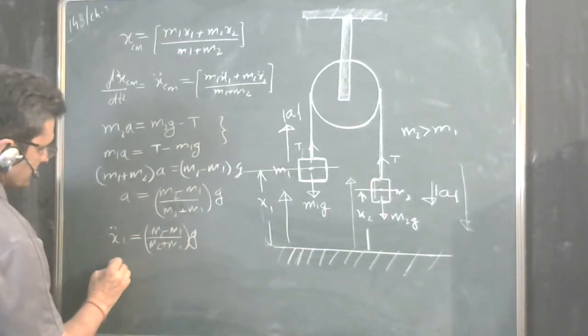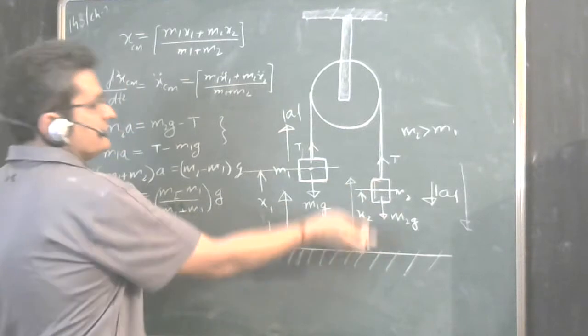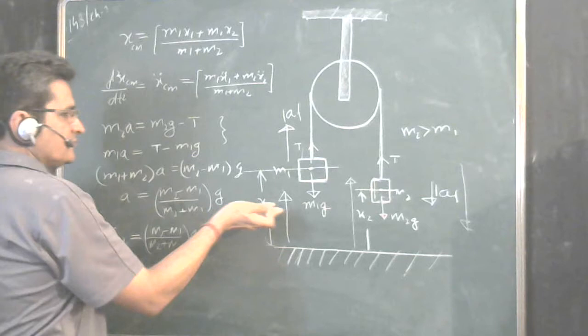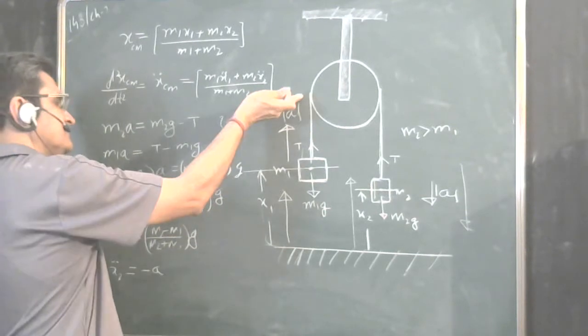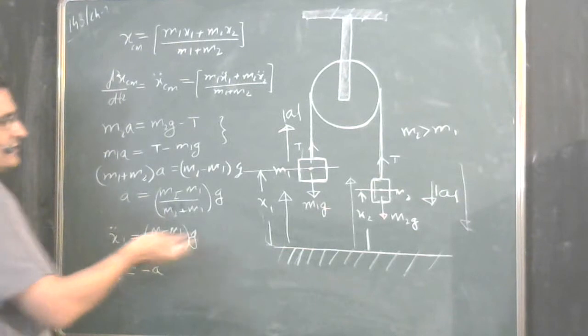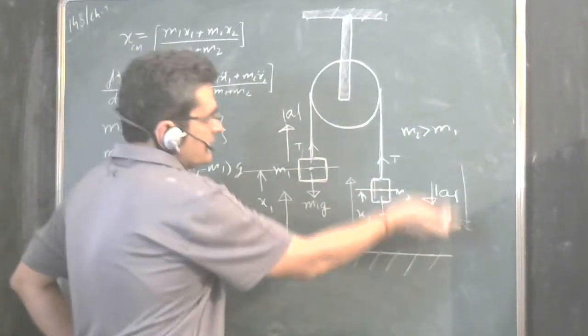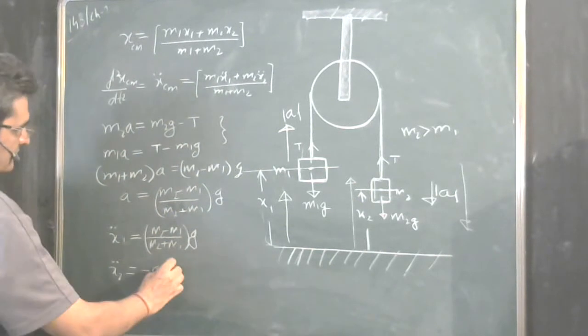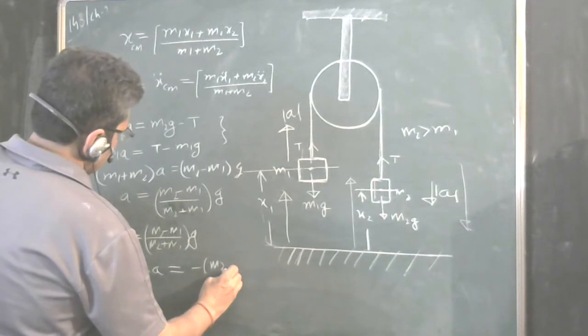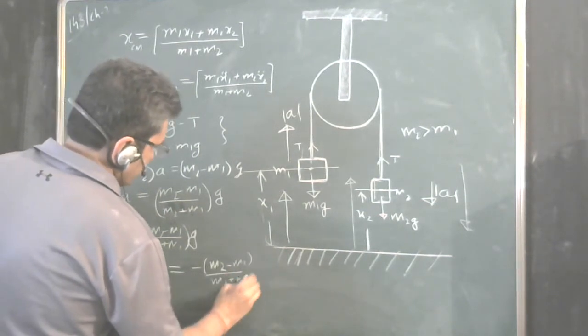So, x2 double dot will have to be taken as minus A. Because x2 is being measured in this direction, A we have taken in this direction. Here, there was no problem. We have taken A like this and x1 is also like this. So, we didn't consider the negative sign. But here, x is moving upwards from the reference. A is downwards. So, we are taking it as negative. So, it will be minus M2 minus M1 upon M2 plus M1.